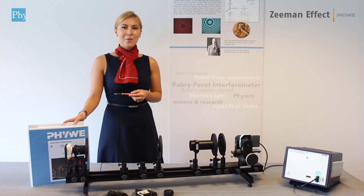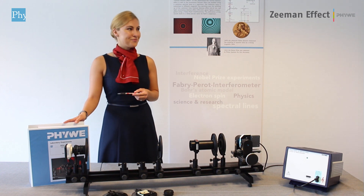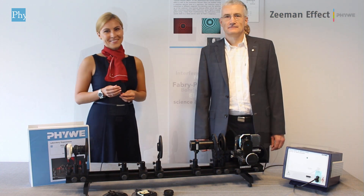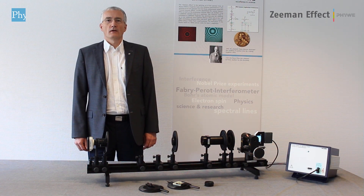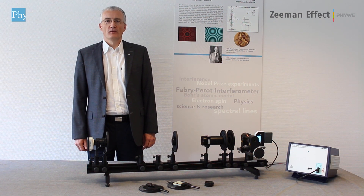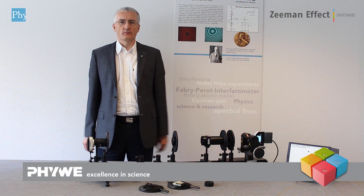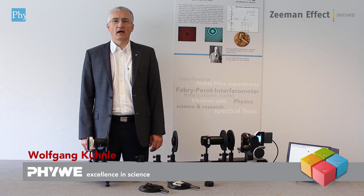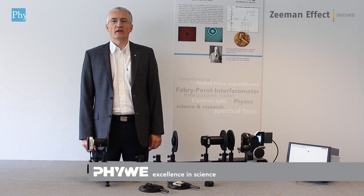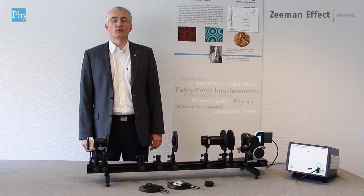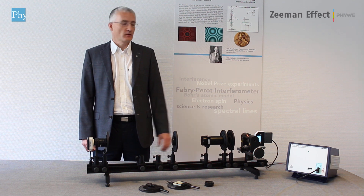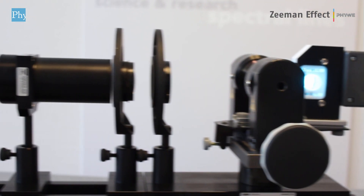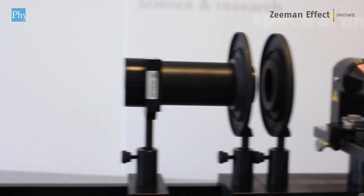And now my colleague will show you how. Hello everybody. Now let us have a look at the experimental setup. The Ziemann effect is about splitting up the energy states of electrons in an external magnetic field and making the energy states visible.